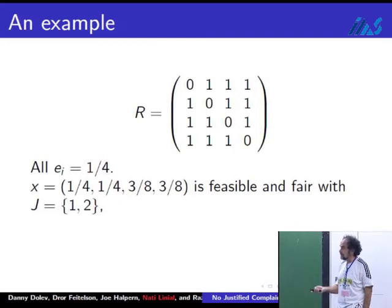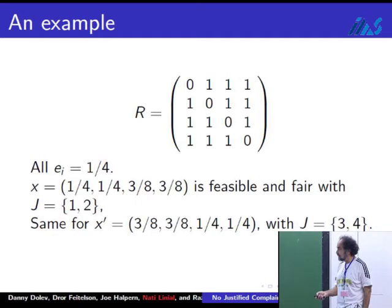It's very easy to check that this is the feasible and fair solution where the bottleneck resources are one or two. But of course, you see the symmetry here, so you won't be surprised that there is also this solution: three-eighths, three-eighths, a quarter, and a quarter is also feasible and fair. Here, the bottleneck resources are three and four.